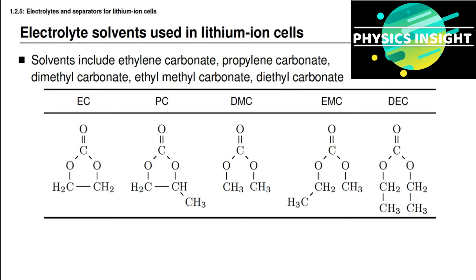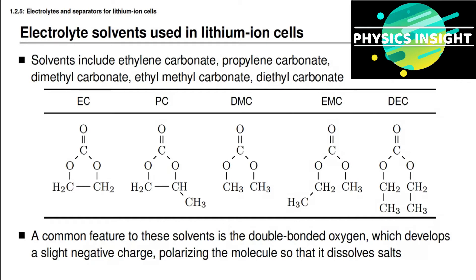I'd like to share a common feature of all these solvents. If you look at the chemical bond structure of each solvent drawn in the table, you will notice they are different in many ways but similar in one way: at the top of each molecule there is an oxygen that is double-bonded with a carbon atom. This double bond causes the oxygen atom to develop a slight negative charge and the other parts of the molecule to develop a slight positive charge, so the overall molecule is slightly polarized. It's this polarization that allows these solvents to dissolve salts.